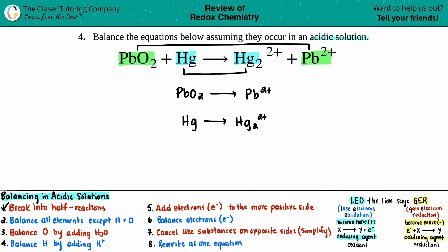Step two: after making those two half reactions, balance all the elements except for hydrogen and oxygen — don't even look at those yet. I have one lead on each side, so that's balanced. On the bottom, I have one mercury on the left but two on the right, so I put a 2 in front of Hg. Now step two is done.